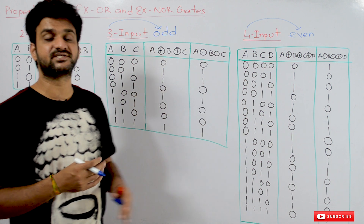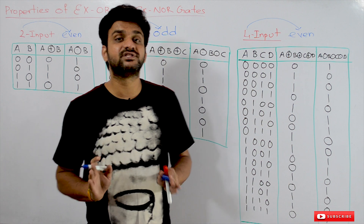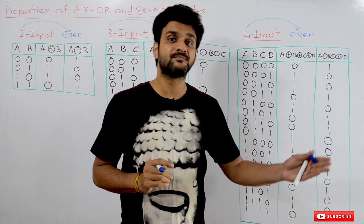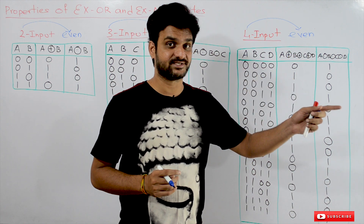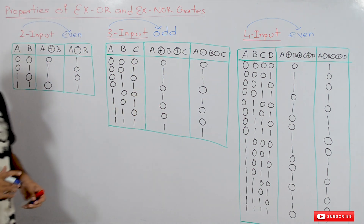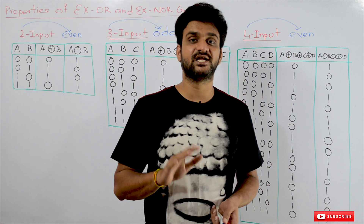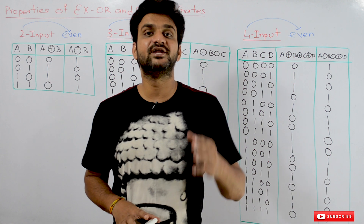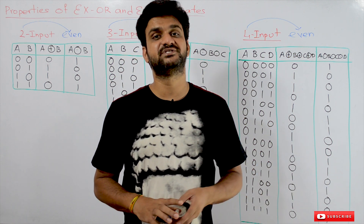These concepts were already discussed in our previous classes. And whenever the number of ones in the inputs are even in number, then the output is going to be a one in the XNOR case. That is the property we need to understand. Hope you got the clarity on this concept. If you haven't subscribed to our channel, please subscribe and press the bell icon for the latest updates, and post any doubts in the comment section below.